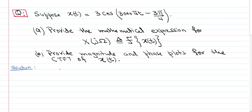You can solve this problem using first principles, as long as you remember that the Fourier transform of a complex exponential e^(jω₀t) is 2π·δ(ω − ω₀).